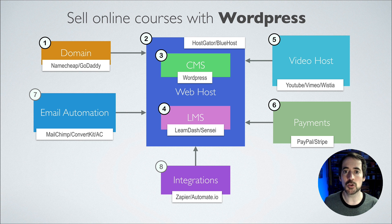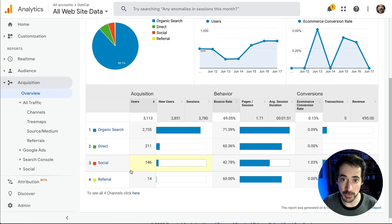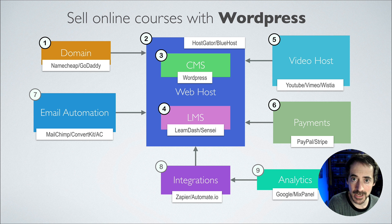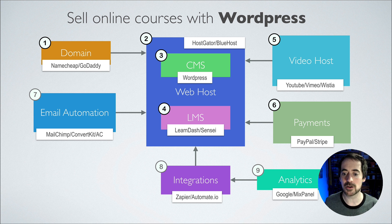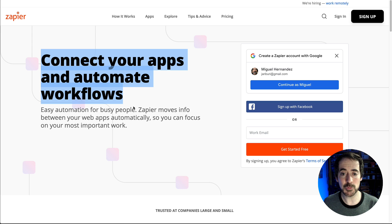On top of that, you can integrate with many other tools. A typical one would be Google Analytics, so you can see how your web pages and landing pages are performing — where traffic is coming from, user behavior, and how well your pages are converting. If your funnel looks like: free YouTube videos or paid advertising, then email list, then course promotion, you want to know if visitors are converting into paid customers. You can use analytics tools like Google Analytics or Mixpanel.